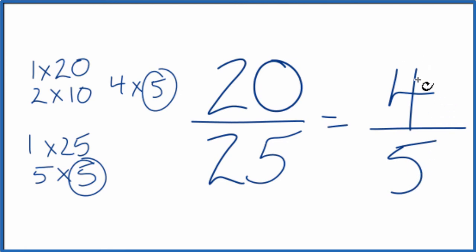We can't simplify this any further. If you divide 4 by 5 and 20 by 25, you'll get the same answer. They're equivalent fractions. It's just that we've simplified 20 over 25 down to 4/5.